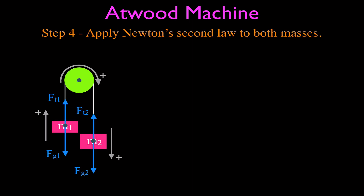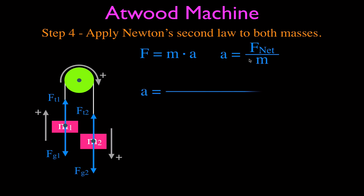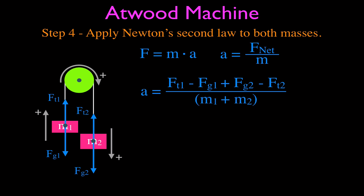Now we're on step four — applying Newton's second law, F = MA, to calculate the acceleration. We rearrange for acceleration where F_net divided by the total mass gives us acceleration. We add up all four forces: for M1, the tension FT1 is positive (up is positive) and FG1 is negative. For M2, FG2 is positive and FT2 is negative. Then we divide by the sum of M1 and M2.